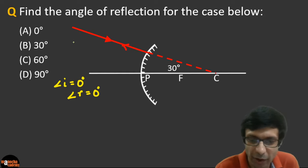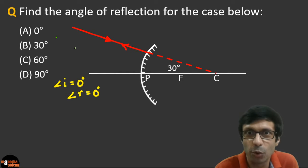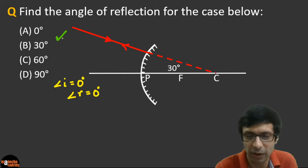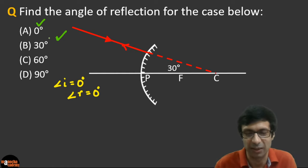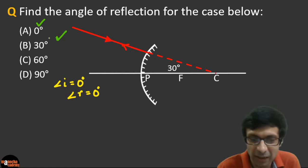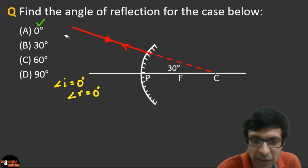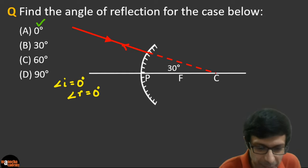Very good — the right answer is option A. The reason is it's along the normal, so both the angle of incidence and angle of reflection are zero.